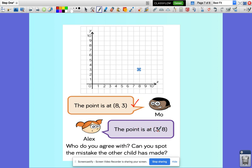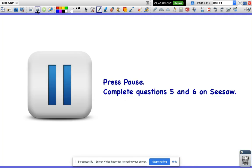If it was Alex's, she said (3, 8), which actually would have been 3 up here. (3, 8) is up there. So Mo is correct. Alex has made the error because she went up the y-axis first, and then across to the x-axis. She went up the stairs, and then along the corridor. It's not that. It's the other way around. Try to complete the rest of the questions on Seesaw.